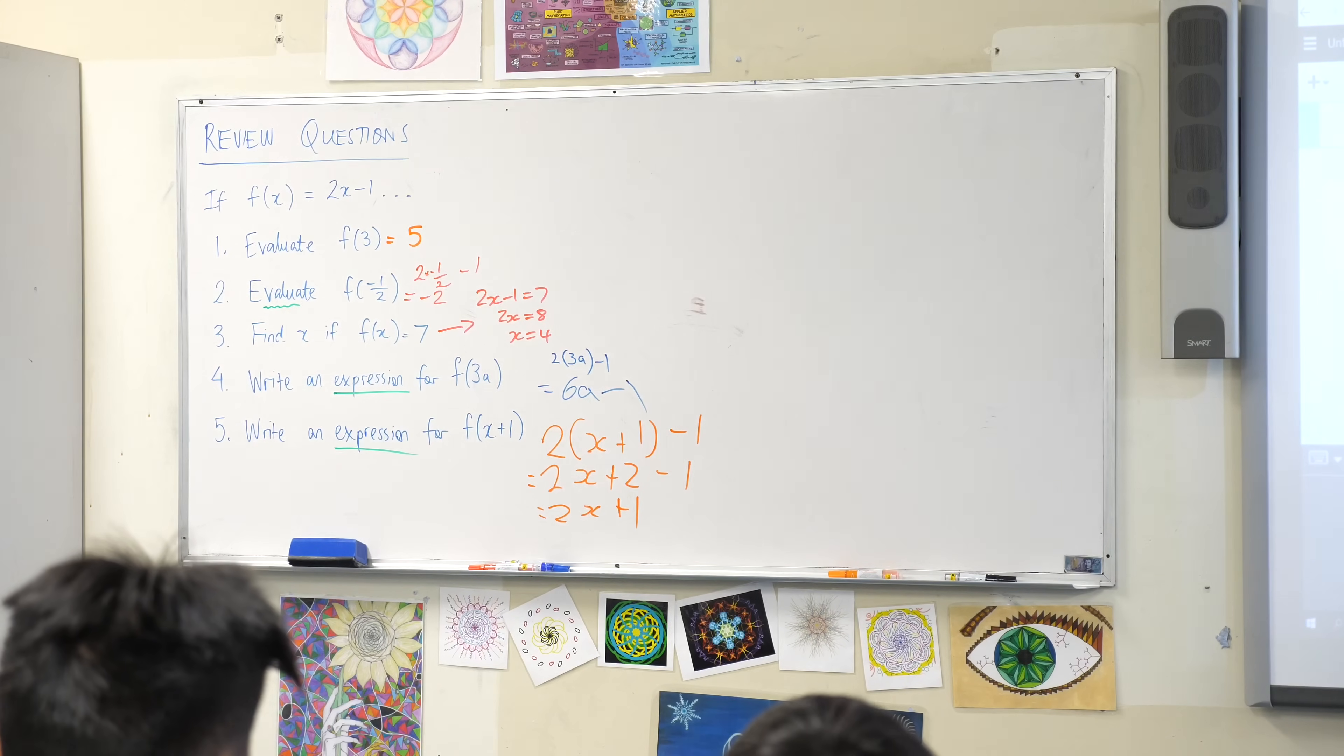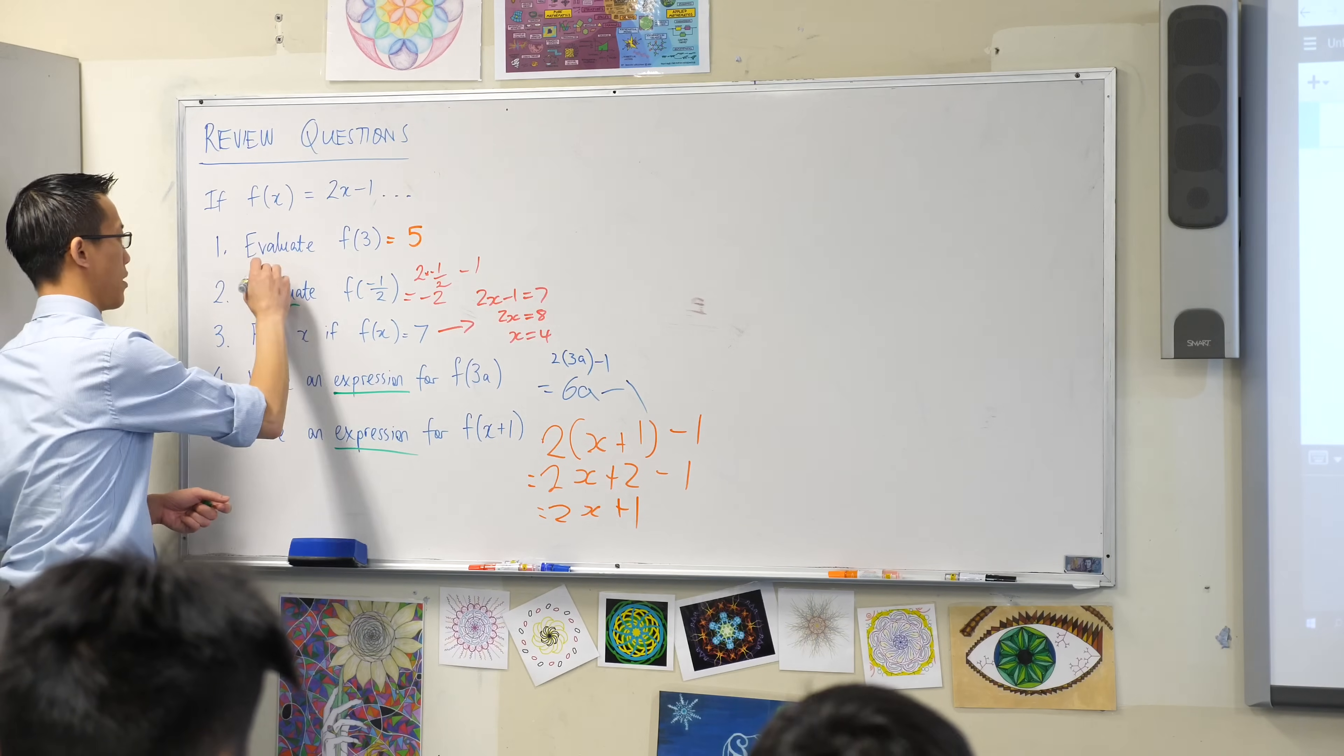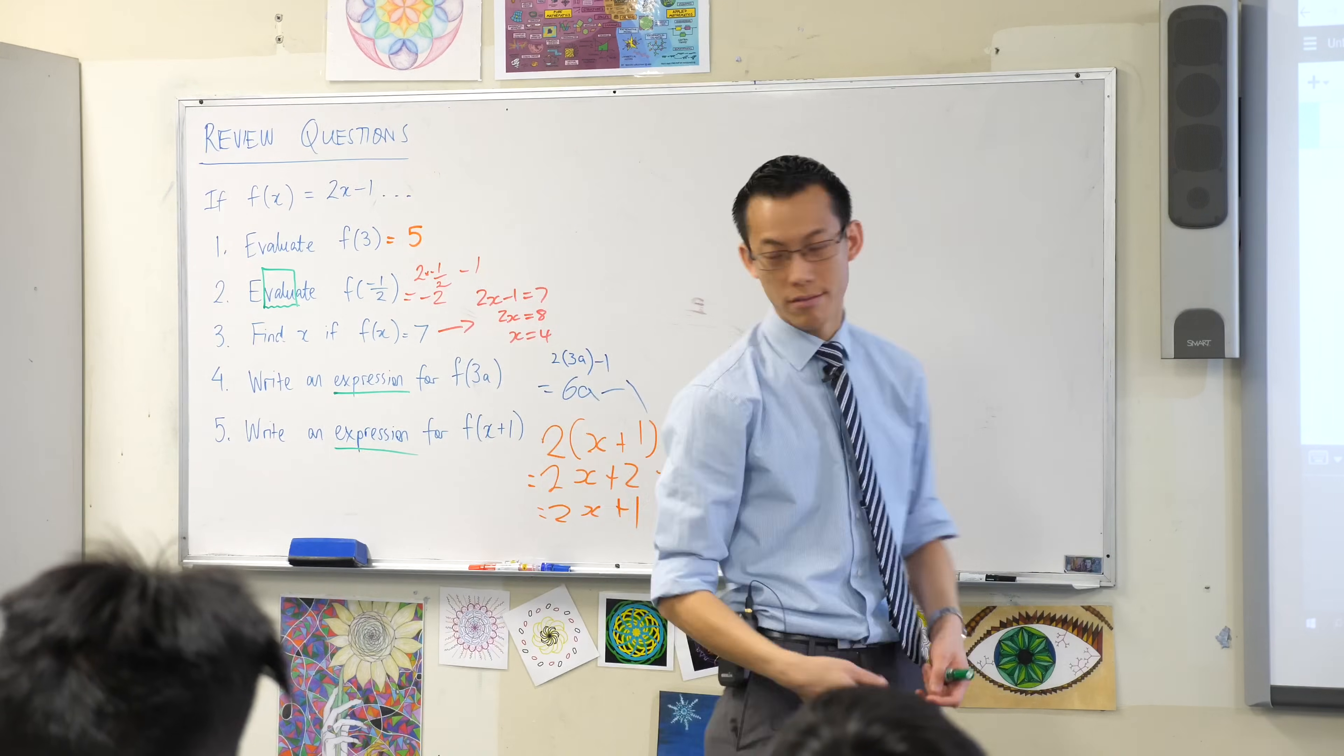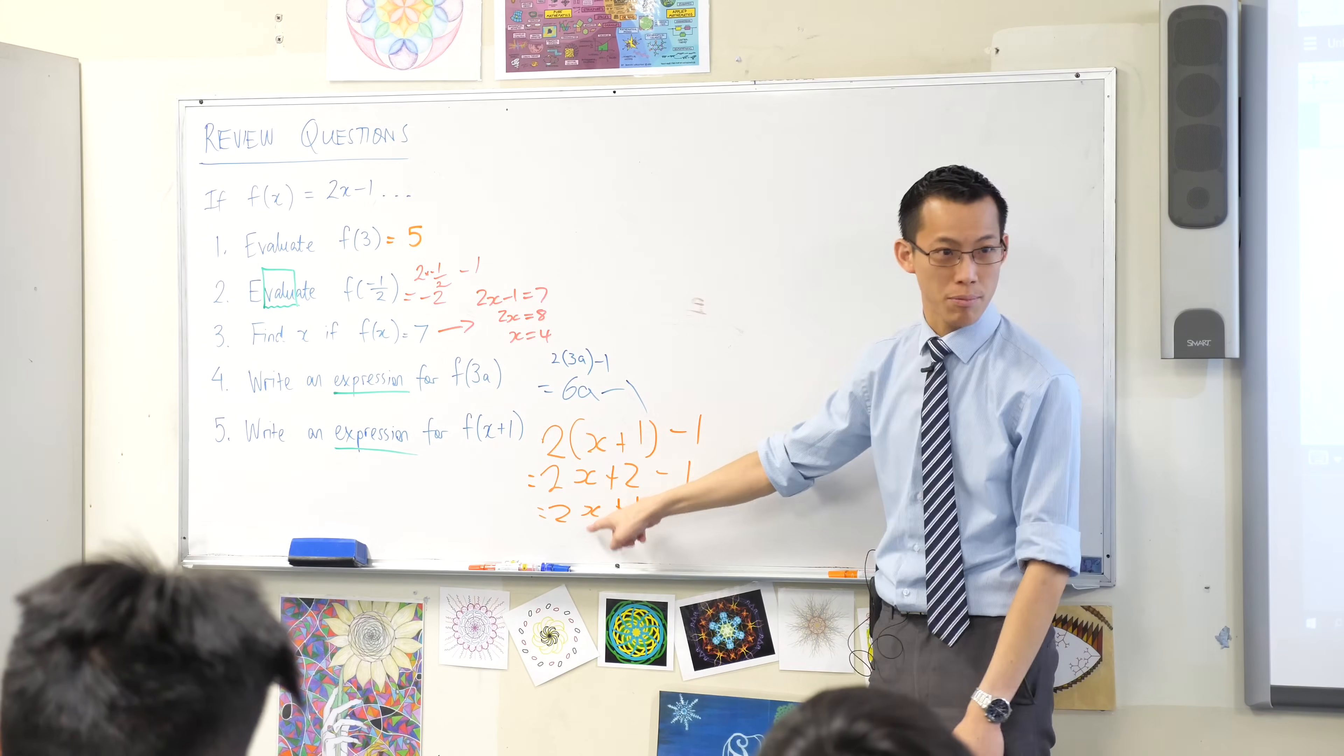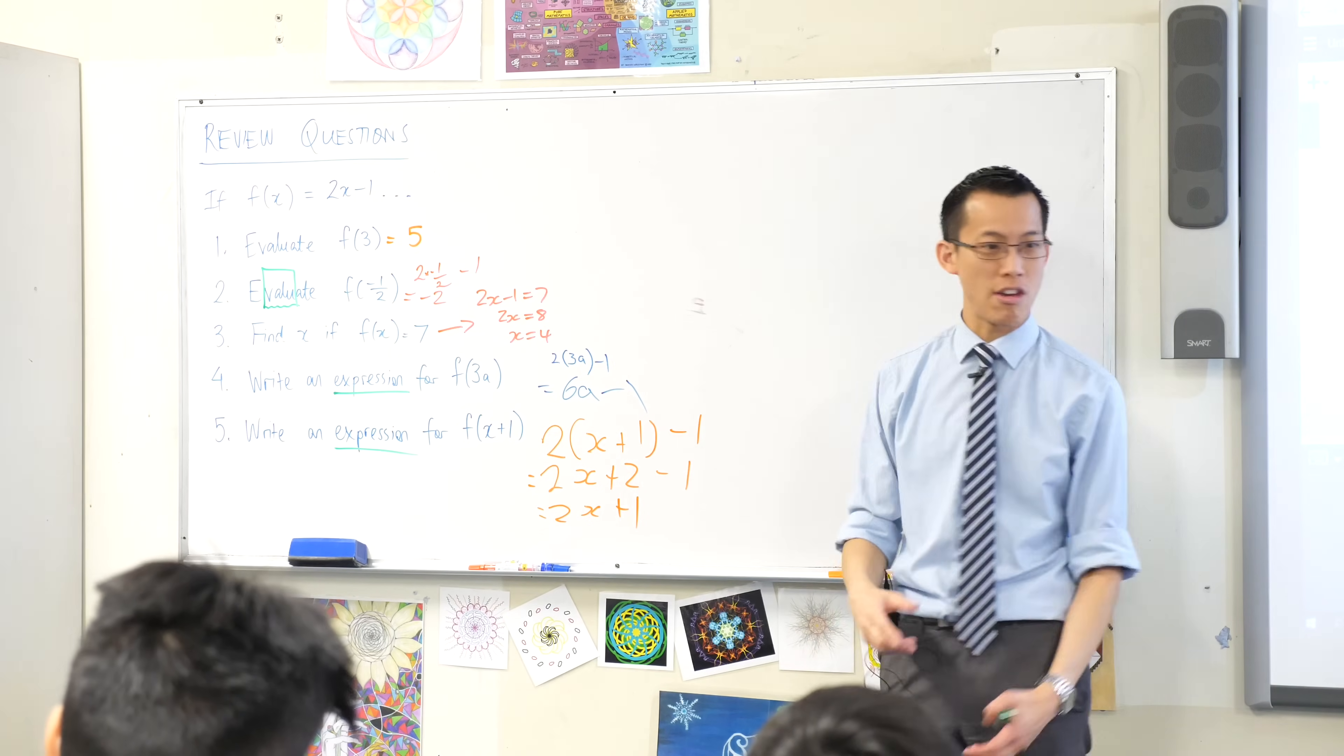Yeah, so evaluate has to do with a final answer because the word itself says what it's doing. Tell me the value, so a value is something like 11 or 5, right? This is not a value, it's not a value, it's got variables in it, pronouns, it's an expression, right? 2x plus 1, 6a minus 1, are you happy with those?